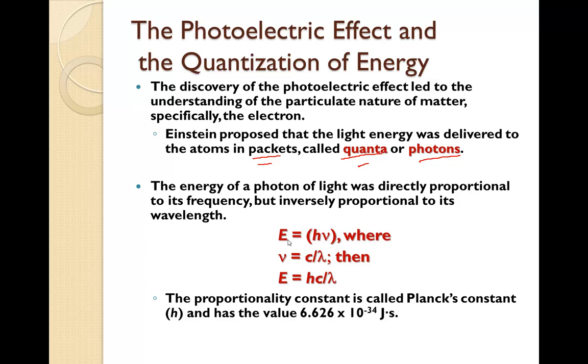So, here is the energy that we just discussed. And then we know that nu is equal to c over lambda. Remember, c is the speed of light, which is 3.0 times ten to the eighth meters per second. So, if we combine these two equations and we plug c over lambda into nu, that's where we get this equation here.